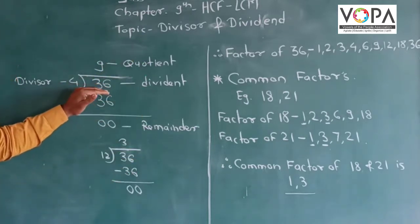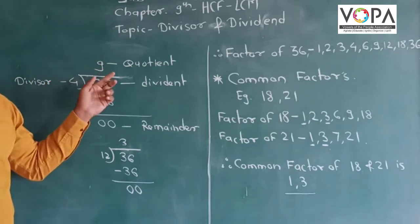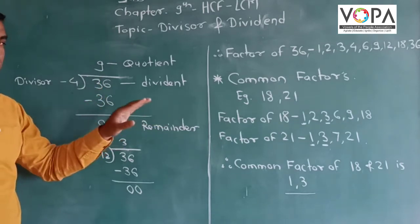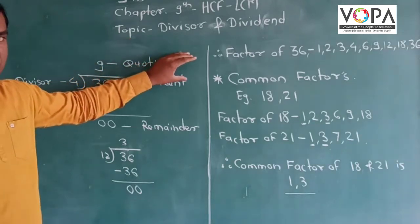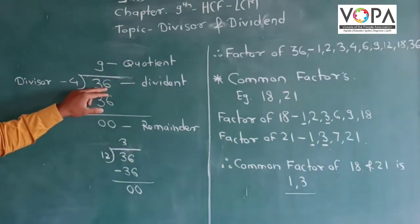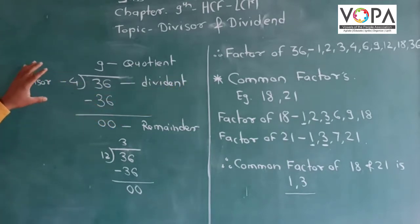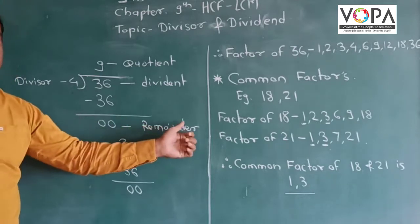36 divided by 4. 4 times 9 is 36. 36 minus 36, the remainder is 0. So in this case, 9 is called the quotient, 36 is called the dividend, 4 is called the divisor, and 0 is the remainder.